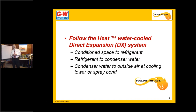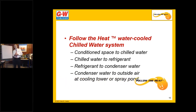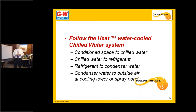With a chiller, it's either three steps or four. With an air-cooled chiller, it's three steps: the heat goes from the conditioned space to the chilled water, from the chilled water to the refrigerant, and from the refrigerant to the outside air. But with a water-cooled chiller, it becomes four steps: conditioned space to chilled water, chilled water to refrigerant at the chiller's evaporator, refrigerant to condenser water at the chiller's condenser, and condenser water to outside air. It can be two, three, four steps, or more — I've seen systems with five or six steps — but no matter how many steps, it's just heat transfer.